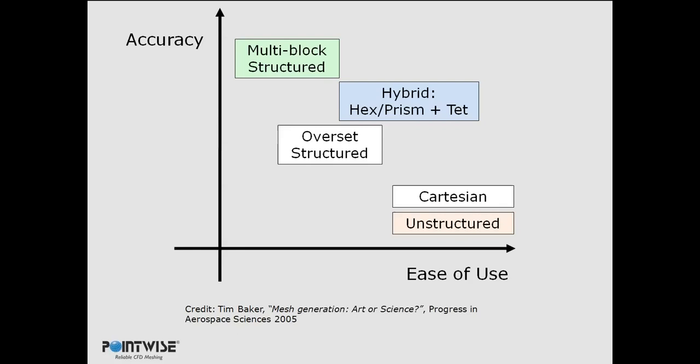Hybrid hex-prism-tet meshes, kind of in the middle here, also pose their own challenges, but they're high in terms of ease of use and kind of high up there in terms of accuracy. It's almost better in cases where you're not certain of what the flow looks like to start by using an unstructured mesh. The reason for that is it turns out that an unstructured mesh is relatively insensitive to the flow alignment.